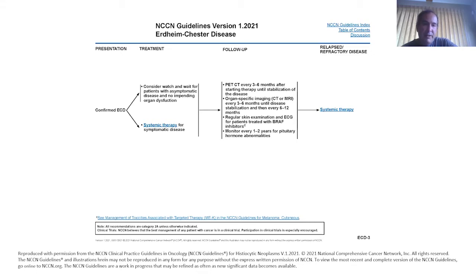Skin examination is important, both for cutaneous involvement of the disease and because treatments like BRAF inhibitors can have skin toxicity. Some of these drugs can also have cardiac toxicity, so ECG monitoring is very important. Monitoring of pituitary hormone levels every one to two years is also recommended — I usually involve an endocrinologist, as blood tests can be a better reflection of pituitary function than changes seen on imaging.